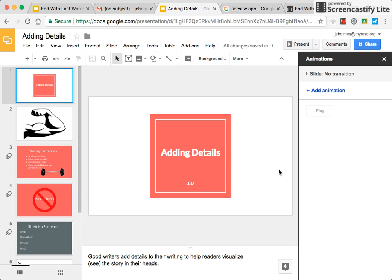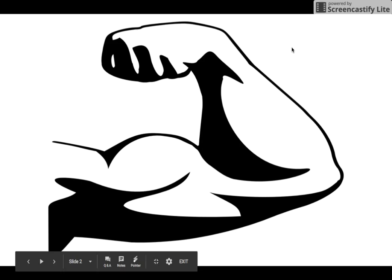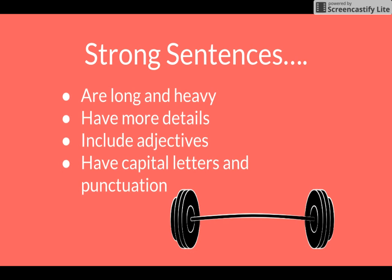All right writers, good writers add details to their writing to help their readers visualize or see the story in their heads. We're going to talk about how we can add details — these details are going to help you to have a really strong sentence. Strong sentences are long and heavy, they have more details, they include adjectives — remember adjectives are describing words. They also make sure that they start with a capital letter and they include punctuation at the end.